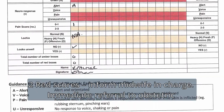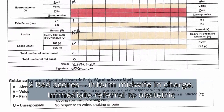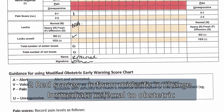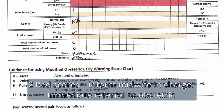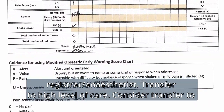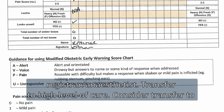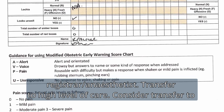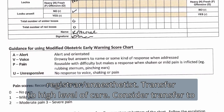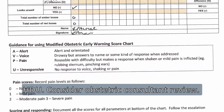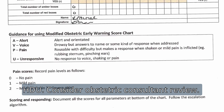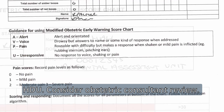Two red scores: inform the midwife in charge, make an immediate referral to the obstetric registrar and anaesthetist, transfer to a high level of care, consider transfer to HDU, and consider obstetric consultant review.